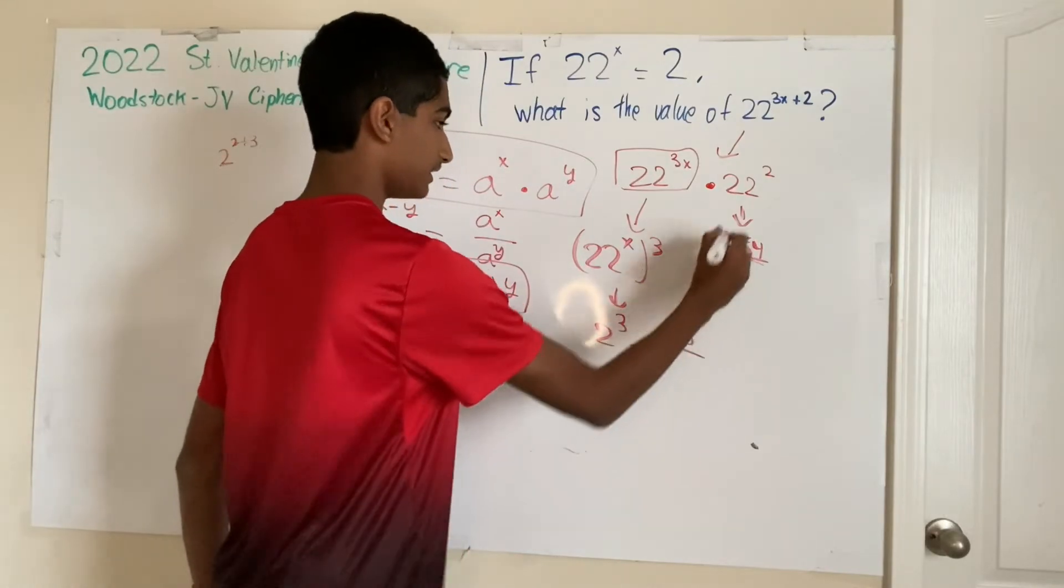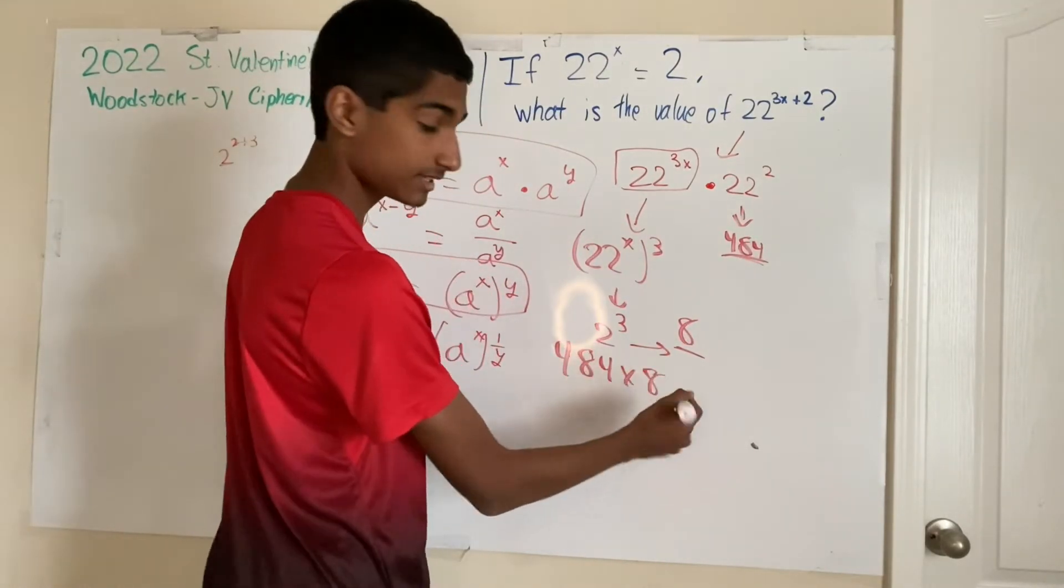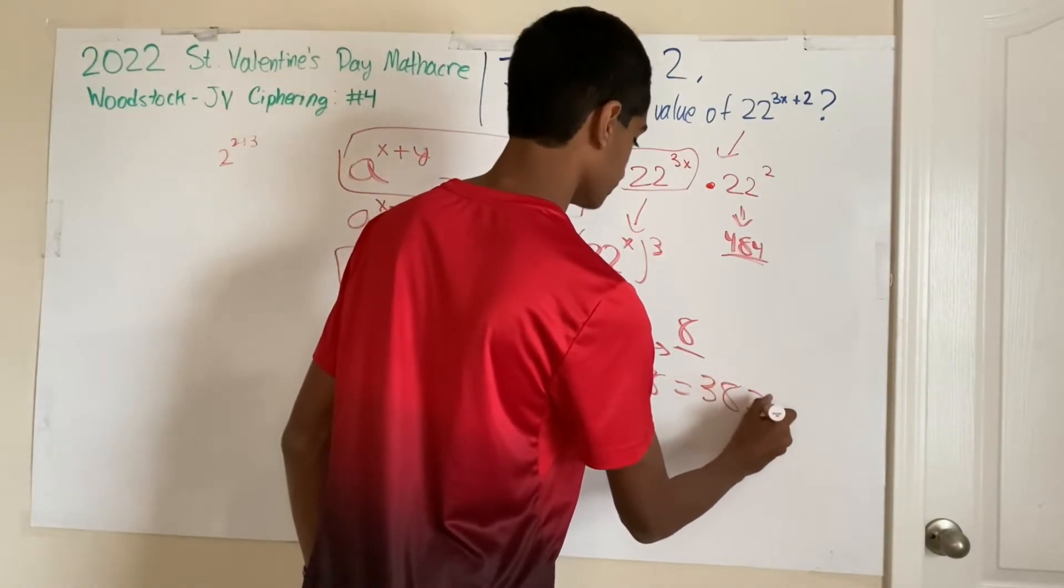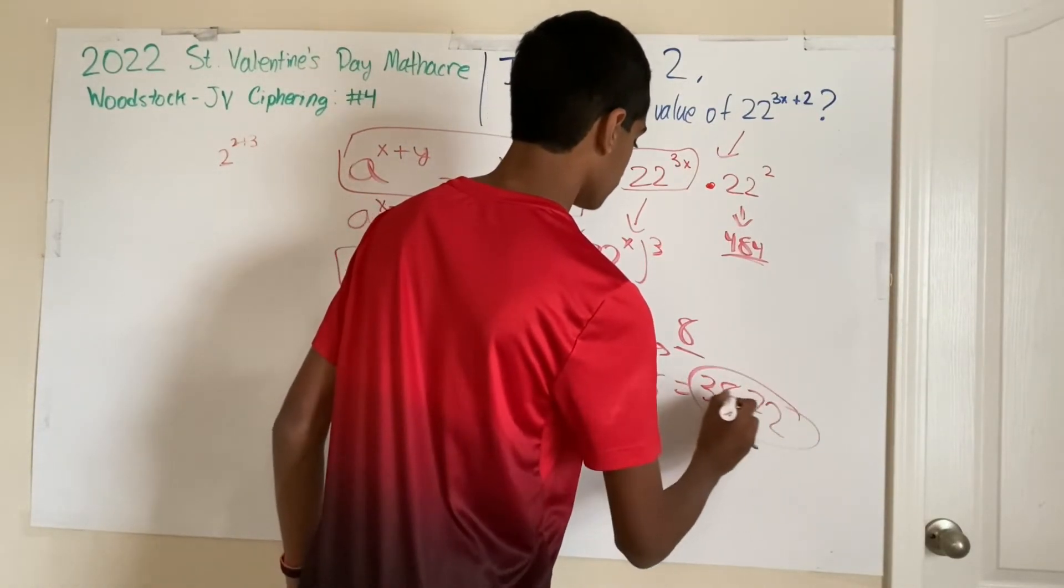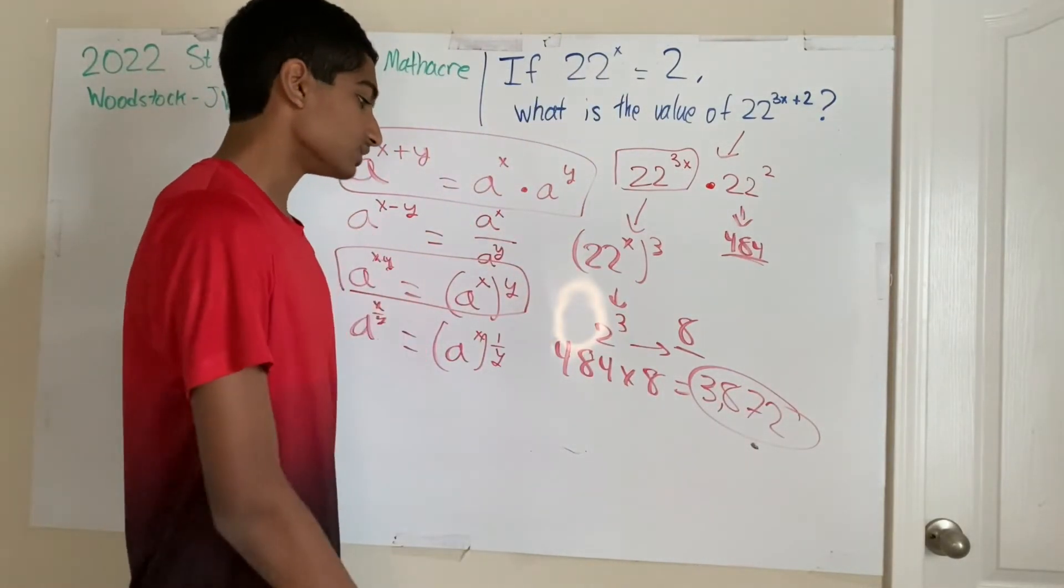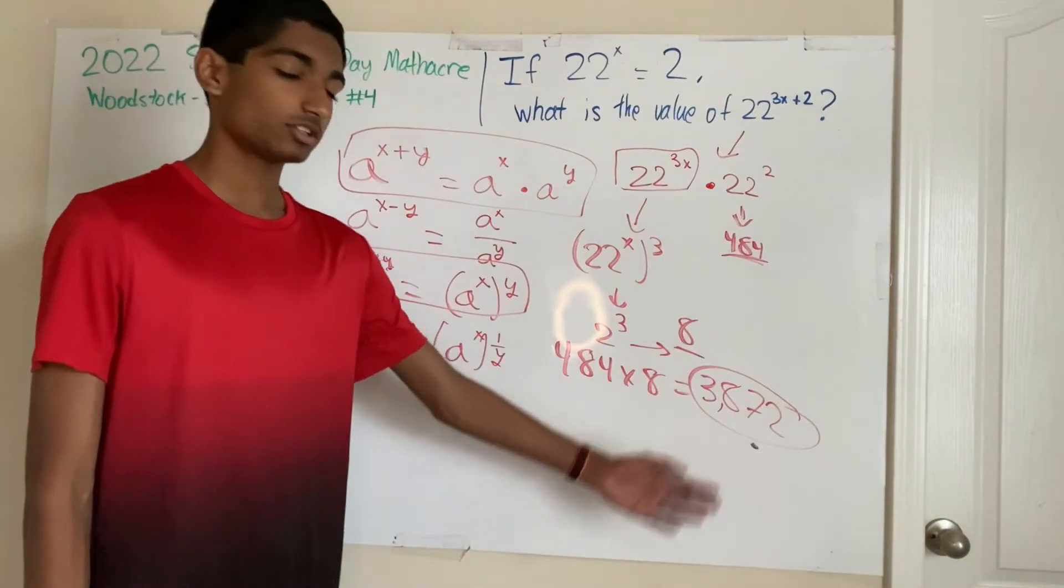And we just have 8 times 484. And multiplying this out, we get 3872. Now there's no quick way to multiply this out. I would just brute force it and multiply it out as you would. But that's our answer to this problem.